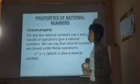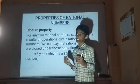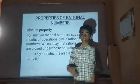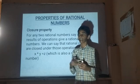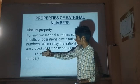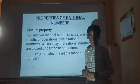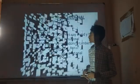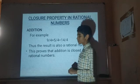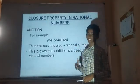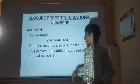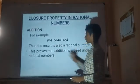Properties of Ratio Numbers — Closure Property: for any two ratio numbers a and b, where a operated with b gives a result that is also a ratio number, this states the closure property. For addition, for example, 9 by 4 plus 5 by 4 is equal to 14 by 4. The result is also a ratio number. This proves that addition is closed under ratio numbers.